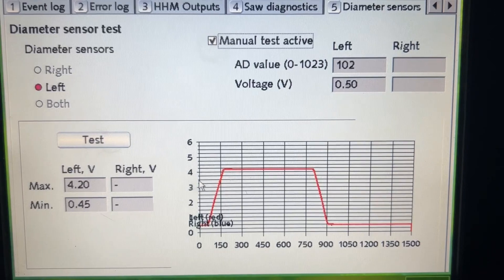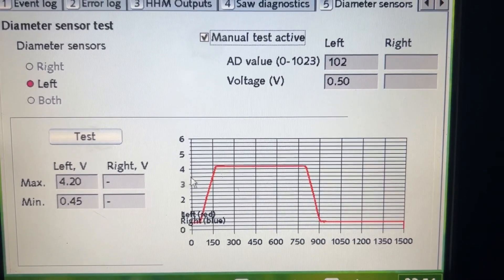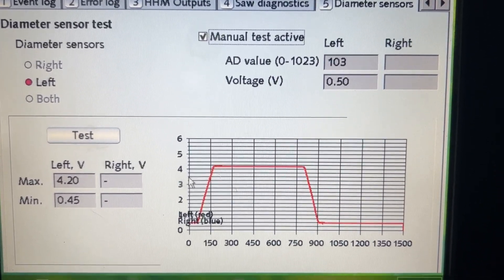Everything runs based on the diameters. How you feed, how your knives grip onto the trees, the pulse, everything runs off the diameters. I can't stress how important it is if you want your machine to run proper.